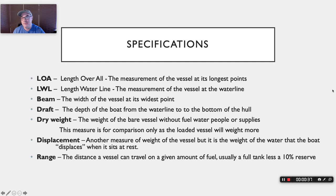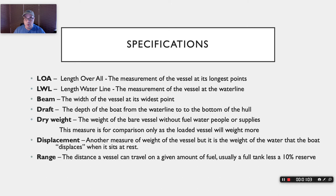We often put up specifications with a bunch of terms on the page, so let's start with LOA — Length Overall. Exactly as it sounds, that is the length of the boat from its longest point, usually the bowsprit, to the back of the boat including the swim platform. Length Waterline is the length from where the boat actually hits the water — typically where the painted waterline is — and that is usually a good bit shorter than the overall length.